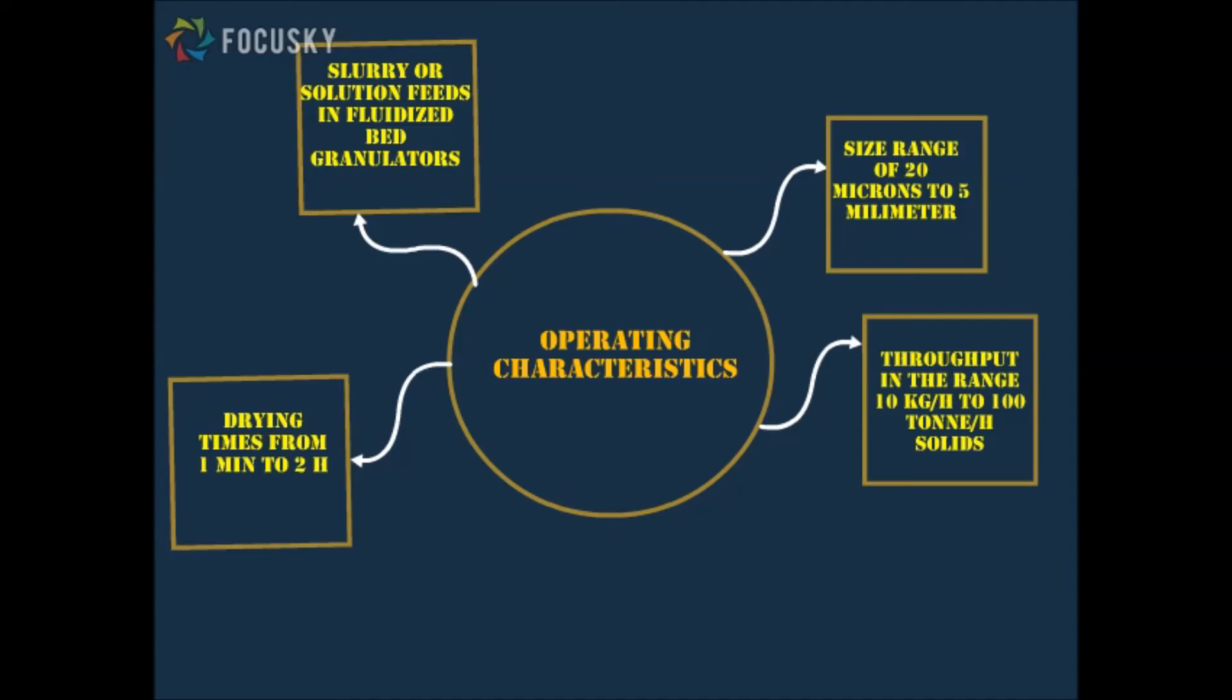The crucial parameters that are being used in fluidization are minimum fluidization velocity UMF and superficial gas velocity U. But what is the difference between these two velocities?